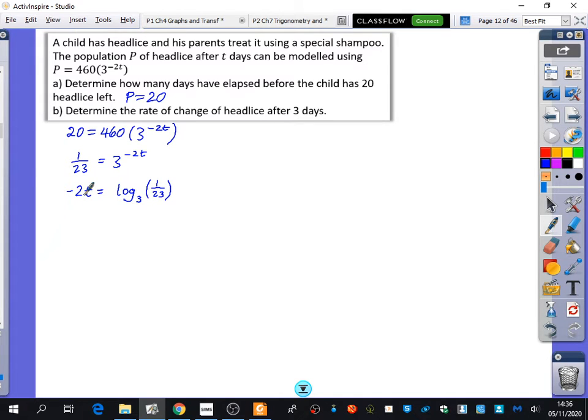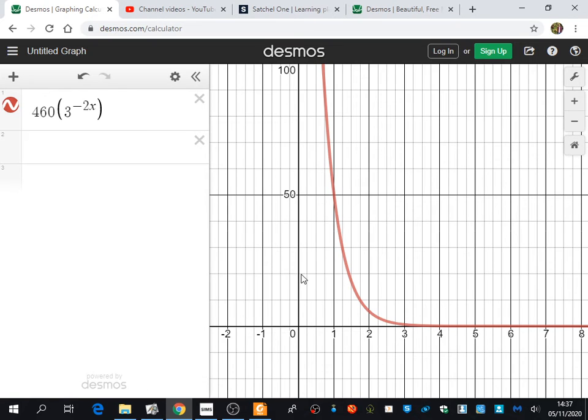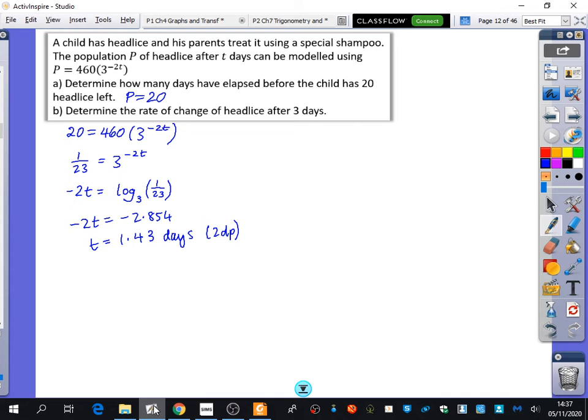It's telling me the base is 3, the answer I get is 1 over 23, and that's the power that I had. If you're not sure how to do this, I can do some revision videos on these things as well. So, I'm literally going to type into my calculator, log base 3, 1 over 23. Your calculators can do that. So, you get minus 2t is equal to this, and so, t is equal to 1.43 days, and that's to two decimal places, which was kind of in line with what our graph said. We want to know when there were 20 nits. Yeah, that looks about like 1.43.